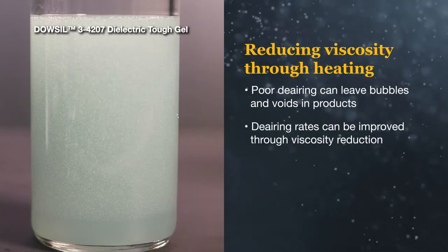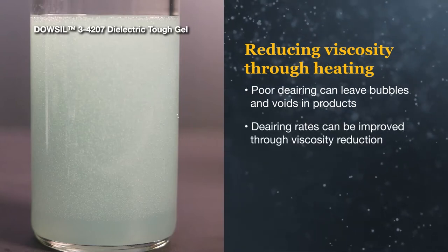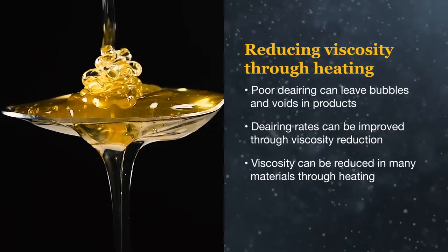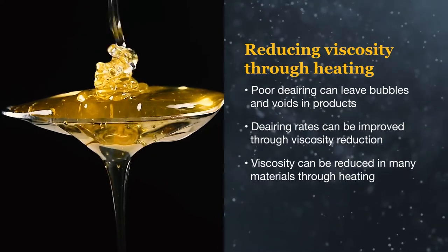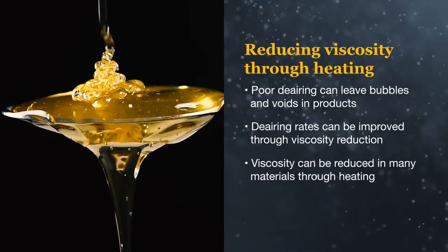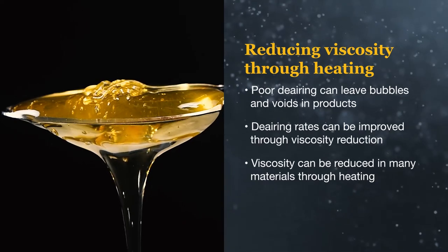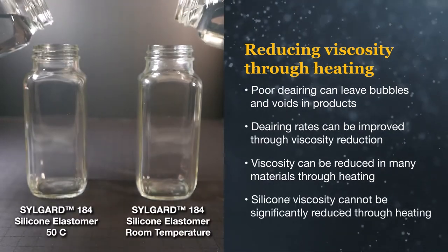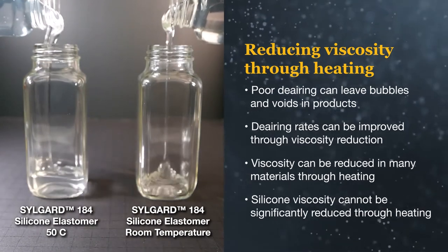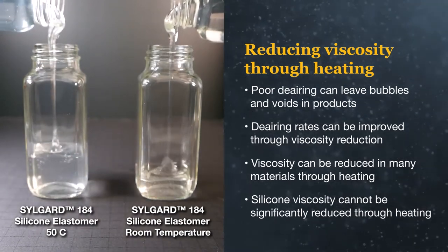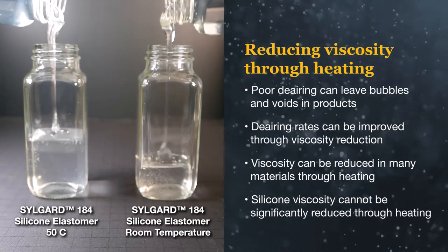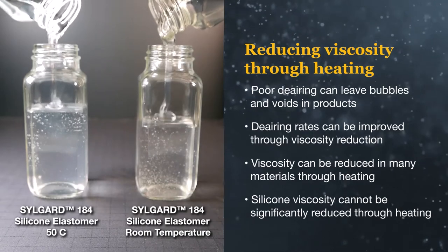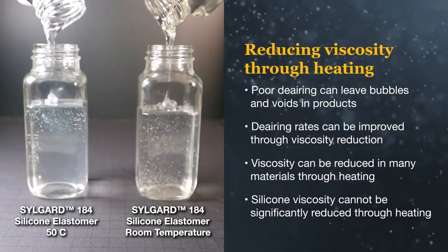Lowering the viscosity of a material can increase the de-airing speed and depth. For many materials, viscosity can be reduced by increasing their temperature through heating. A household example of this is honey, which is very viscous but flows when it's heated. A silicone's viscosity, however, only slightly decreases at elevated temperatures. Heating a liquid silicone will lower the viscosity and allow it to flow faster, but not a significant amount, so this method is not that useful with silicone products.